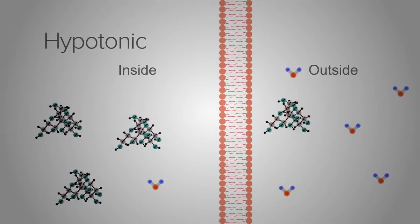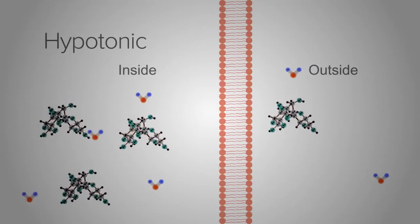With a hypotonic solution, water molecules enter the cell and in the case of a red blood cell cause it to swell up.